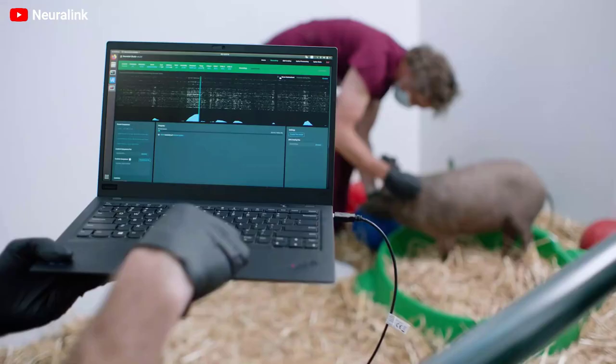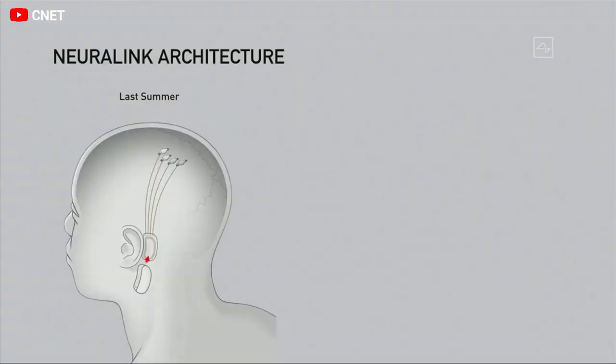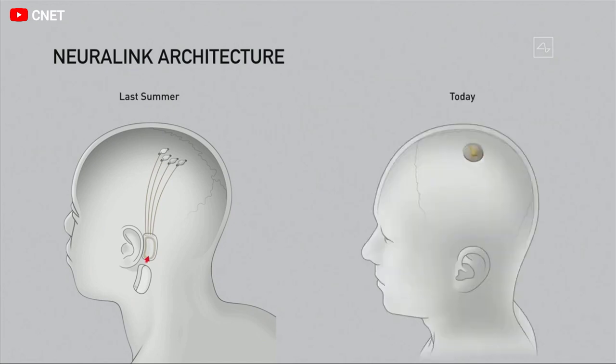Critics of the Neuralink often focus on two points. Firstly, that Elon Musk's company has not created anything new, but only combined the best of existing technologies. But this can be said about any of his projects, and no matter what, Musk achieves amazing results, unlike the critics themselves.